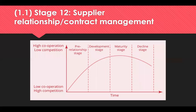Supply management starts after the contract has been awarded and continues through the duration of the contract. The relationship life cycle has four stages: pre-relationship, development, maturity, and decline — each characterised by different levels of cooperation and competition. The buyer should consider the stage of the relationship and the style required, depending on the strategic position of the product or service being procured. Supply management can be conducted using credit checks, monitoring performance against KPIs and service level agreements, as well as conducting reviews, audits, and benchmarking activities.